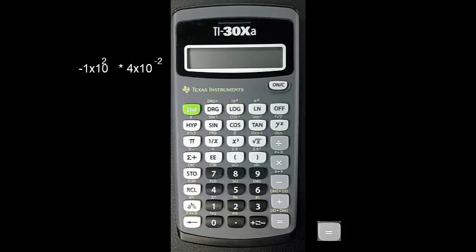If your calculator is still in exponential mode, the display should read negative 4 times 10 to the 0. If you are in floating point, it will simply read negative 4.